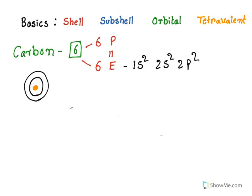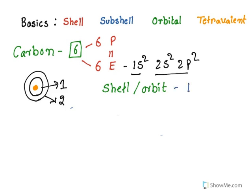Totally 6 electrons are there. The 1 indicates the first shell and 2 indicates the second shell. Shell is also known as orbit — the path in which electrons revolve around a nucleus. These are also known as K, L, M shells. The first shell is known as K, the second one is L, and so on.